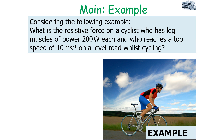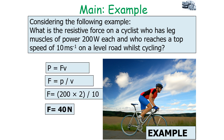What is the resistive force on a cyclist whose leg muscles produce a total power of 400 watts — 200 watts each — and who reaches a top speed of 10 metres per second on a level road? Using power equals force times velocity, force equals power divided by velocity: 400 divided by 10 equals 40 newtons. So the resistive force acting on the cyclist is 40 newtons.